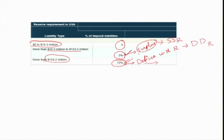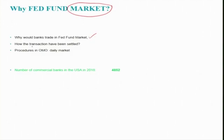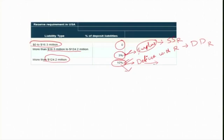Transactions in the Fed fund market are settled mainly through Fed accounts — the transaction is settled through the Federal Reserve account that all banks hold with the Federal Reserve System. This makes lending from one bank to another much easier. If a bank has a deficit in its reserves, it can borrow from small banks, and within a couple of minutes the transaction will be settled through the Fed, fulfilling the reserve requirement.